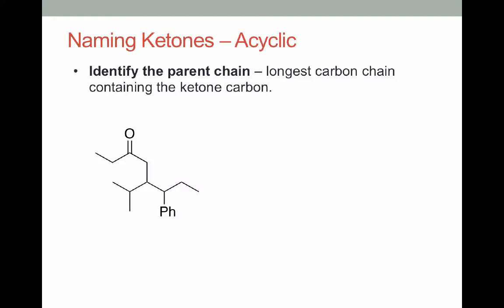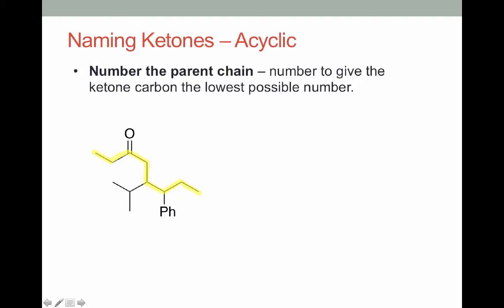So if we look at this example, the first thing we want to do is identify the parent chain, and that's going to be the chain that contains our ketone carbon. Our longest carbon chain with ketone carbon starts up here and goes down to here. Next thing we want to do is number this, and we can number this chain in the direction starting up here or down here, but up here puts the ketone carbonyl at carbon 3, and that's a lower number. So we're going to start up here.